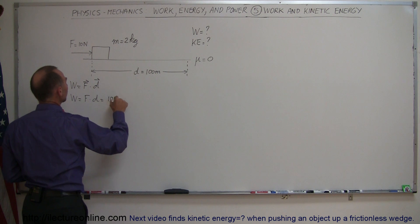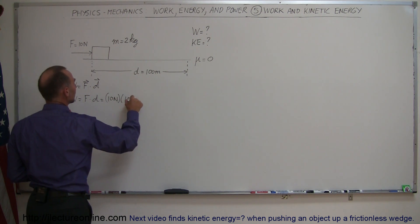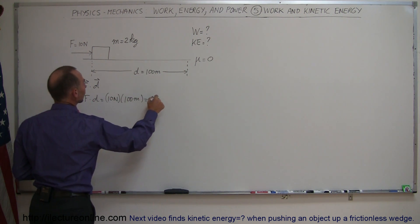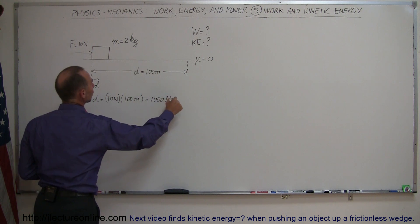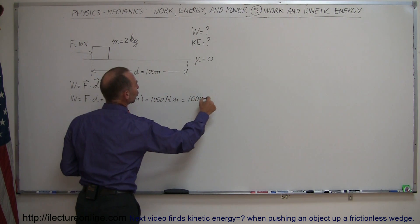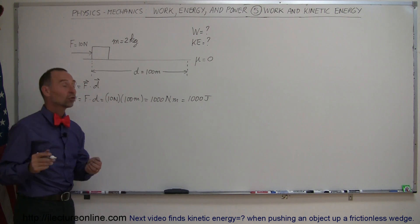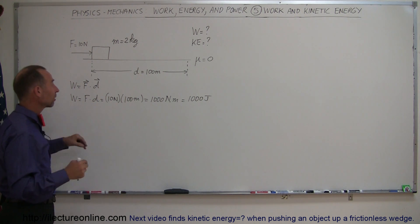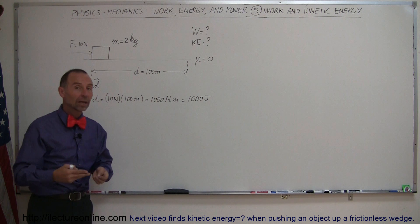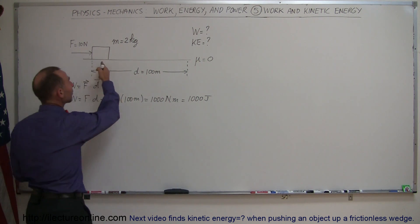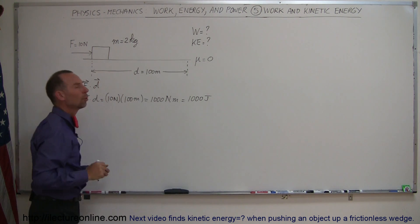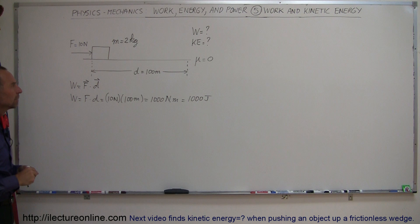which is 10 newtons times 100 meters, which is 1,000 newton meters, which is 1,000 joules. And we can then assume that all of this work is then converted into kinetic energy, and we then assume that the block will have 1,000 joules of kinetic energy when it reaches the end of the 100 meter trip.